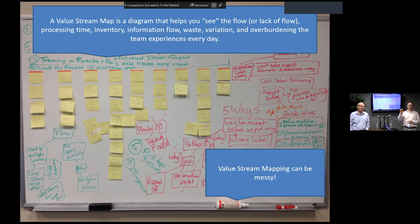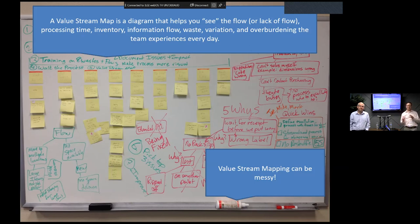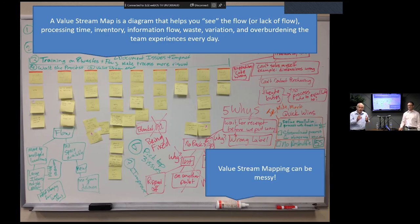Every sticky note with red dashes shows a process step, and all the sticky notes below show all the waste, variation, and overburdening — plus scribble notes around that from going through the DMAIC process on the whiteboard to solve problems. This was at a fish food factory working to optimize how they produce more fish food with better quality — and we would value stream map every day and solve problems that came from the map.